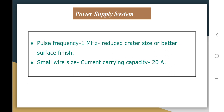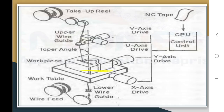The current carrying capacity is less than 20 amperes. You cannot go beyond 20 amperes because we are using a wire of very small diameter, so we cannot supply more current to the wire. If we do, the wire will break due to high heat generation.